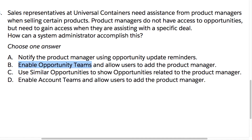That leads us to the correct answer: B — enable opportunity teams and allow users to add the product manager. When you enable opportunity teams for team-based selling, the opportunity owner can add the product manager as part of the opportunity team, specifying their role. Once added as a team member, you can extend them read-only or read-write access to the opportunity.